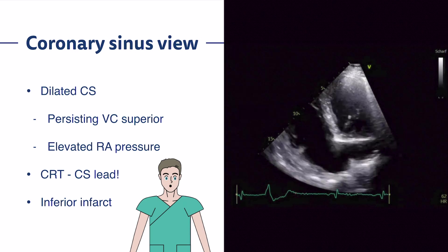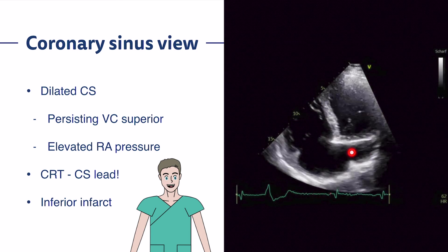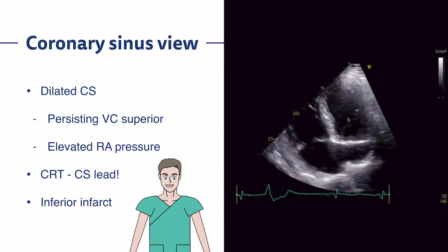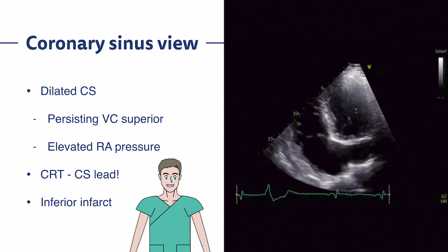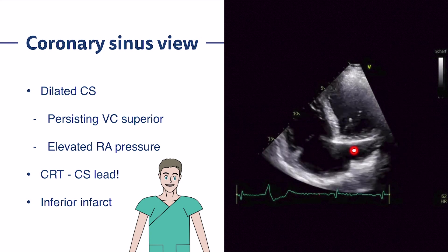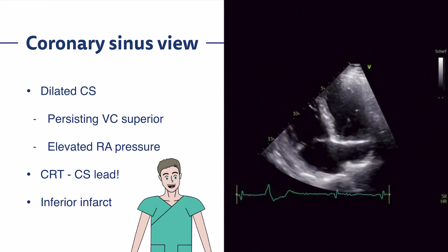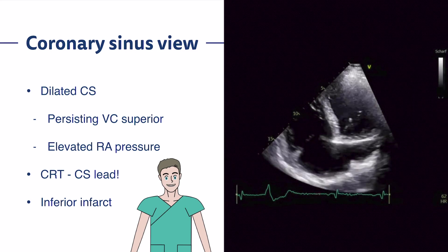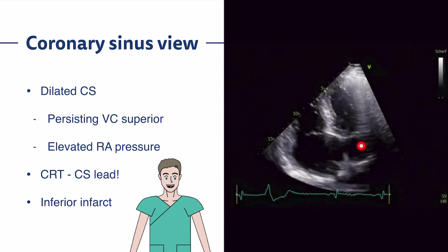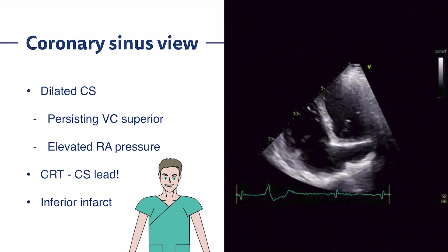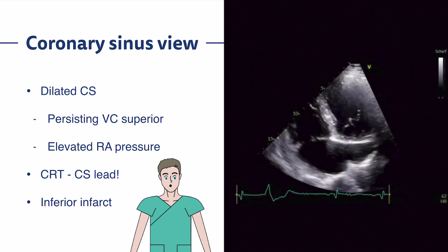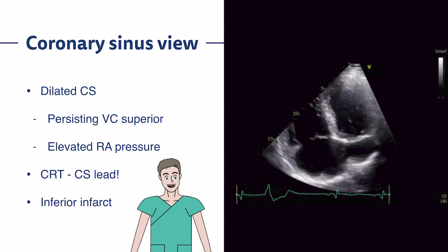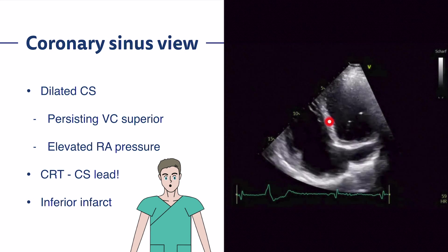When you have a large coronary sinus, this patient with a ruptured sinus of Valsalva demonstrates another pathological or anatomical variant: a persistent left superior vena cava. In young patients, severe dilatation of the coronary sinus most likely indicates a persistent left superior vena cava. It can also hint at elevated right atrial pressures. You can also see the CRT lead nicely in the coronary sinus, as well as other devices such as a reducer or Carillon system used in heart failure treatment. Inferior infarctions can also be visualized in this area.